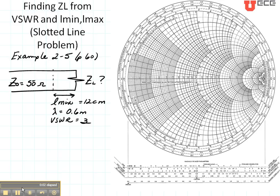Now let's do an example. Let's do the slotted line example 2-5 on page 60 of your textbook. This was done in the classical way in the textbook, and let's show you how to do this with a Smith chart.